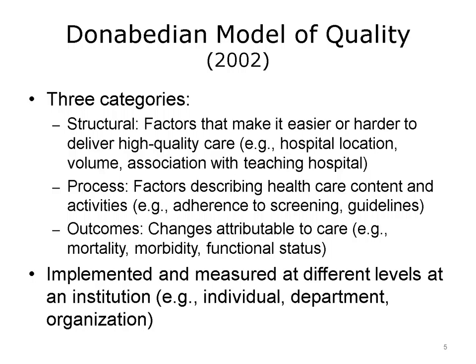Donabedian developed a model of quality with three categories of quality measures. The first category is structural measures, which are factors that make it easier or harder to deliver high-quality care — such as hospital location, patient volume, and whether the hospital is associated with a teaching institution. The second category is process measures, which describe health care content and activities such as how much screening is done and the degree of adherence to established practice guidelines. Finally, there are outcome measures, which are changes attributable to care such as the mortality rate, morbidity, and functional status.